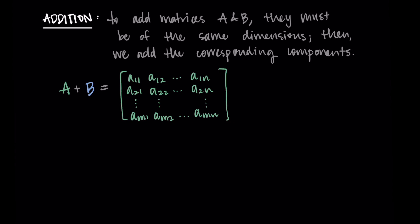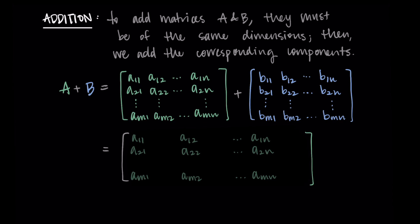Then what we do is we just take corresponding elements. To add them, we get a new matrix. We take a_11 plus b_11, so we're adding those first entries.